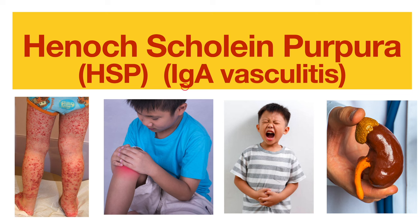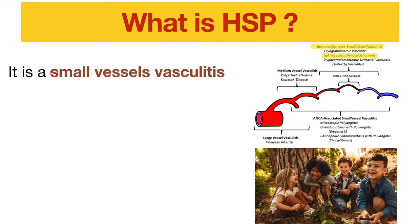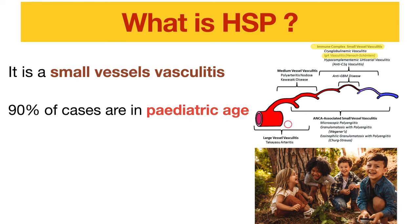First of all, what is HSP? It is actually a small vessel vasculitis, which means inflammation of the blood vessels. We have different sizes of vasculitis: large vessel vasculitis called Takayasu Arteritis, medium vessel vasculitis like Kawasaki disease, and for small vessels, we have IgA Vasculitis, also called HSP.